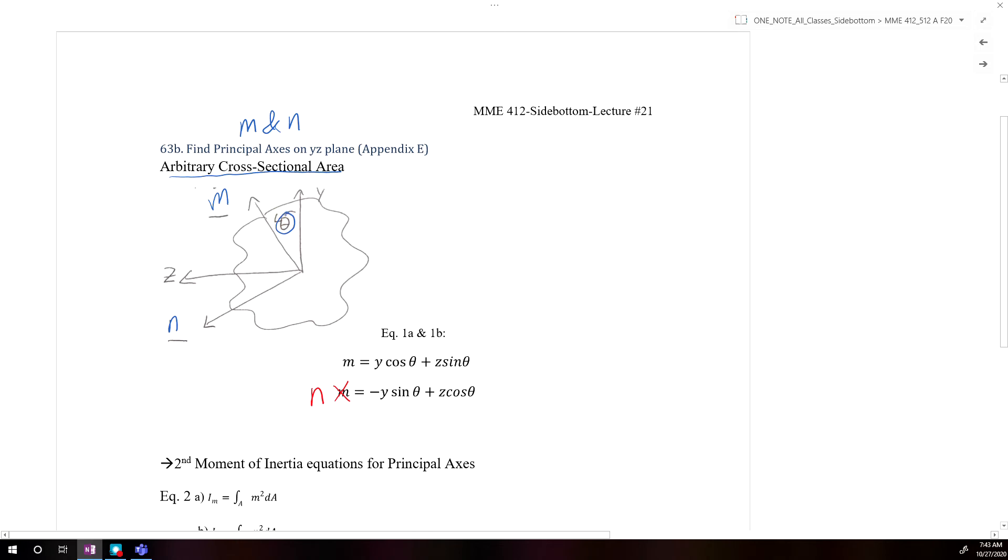In order to calculate the values of M and N, we can use the trig identity so we know that M can be set equal to y times cosine of theta, which gives us the projection of y onto M, and z sine of theta.